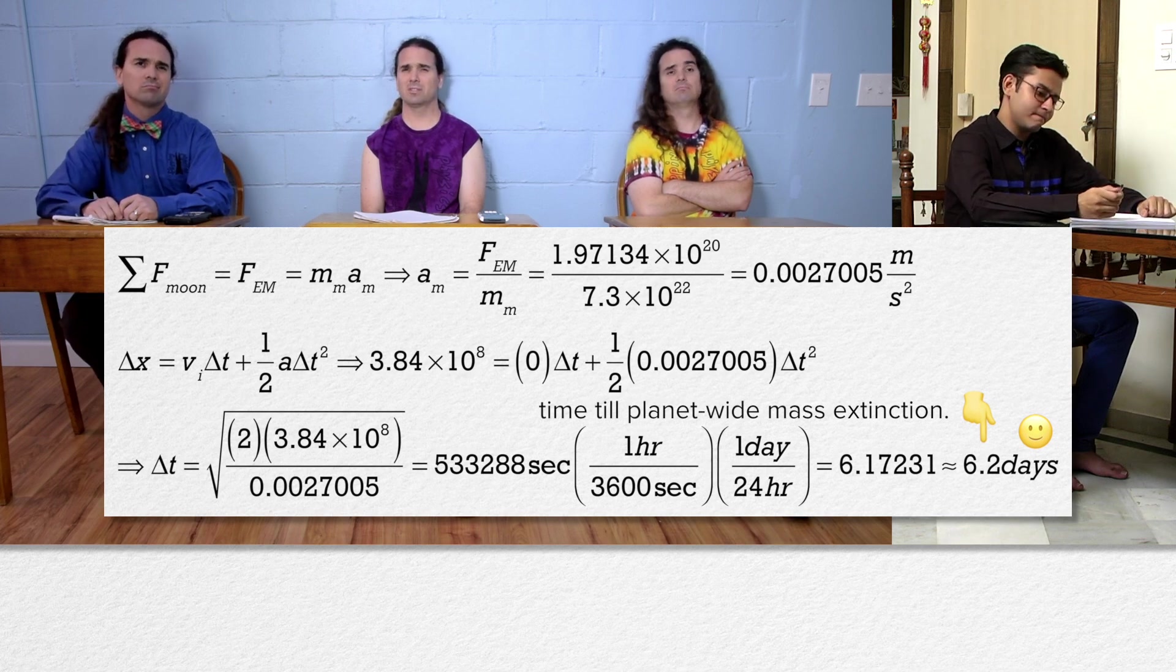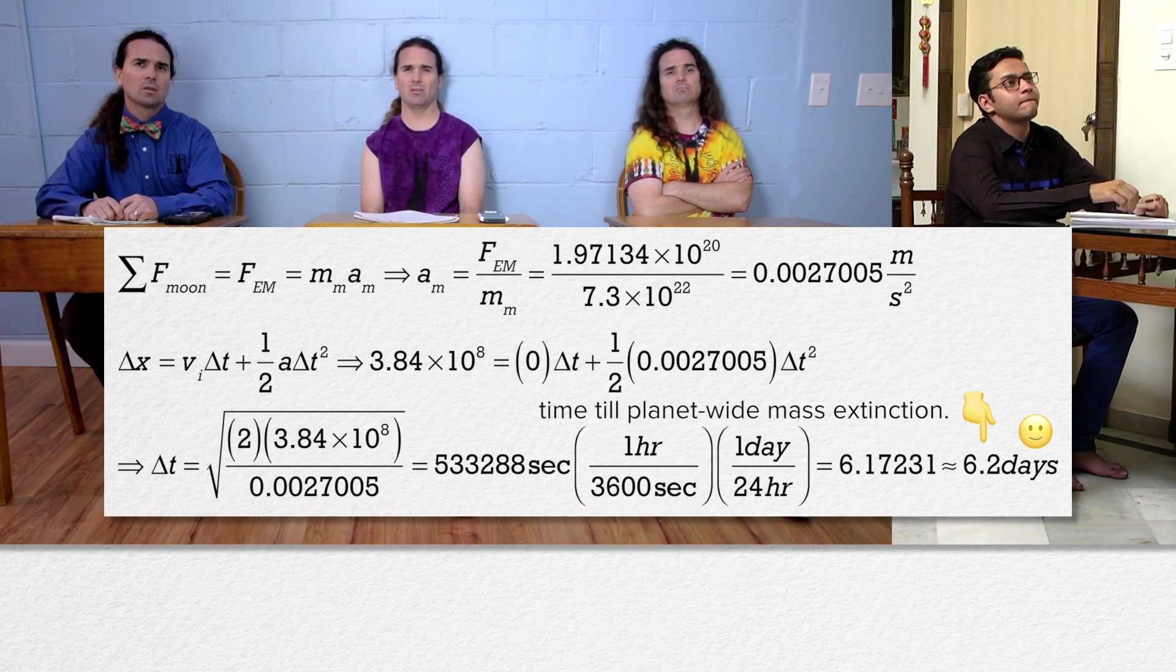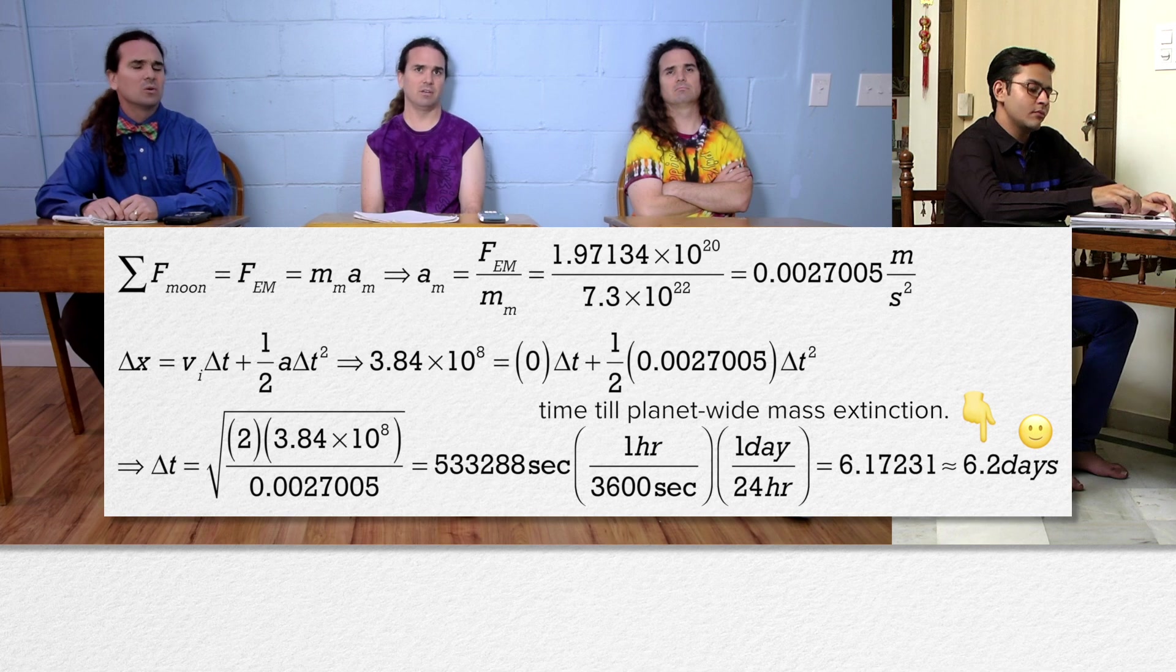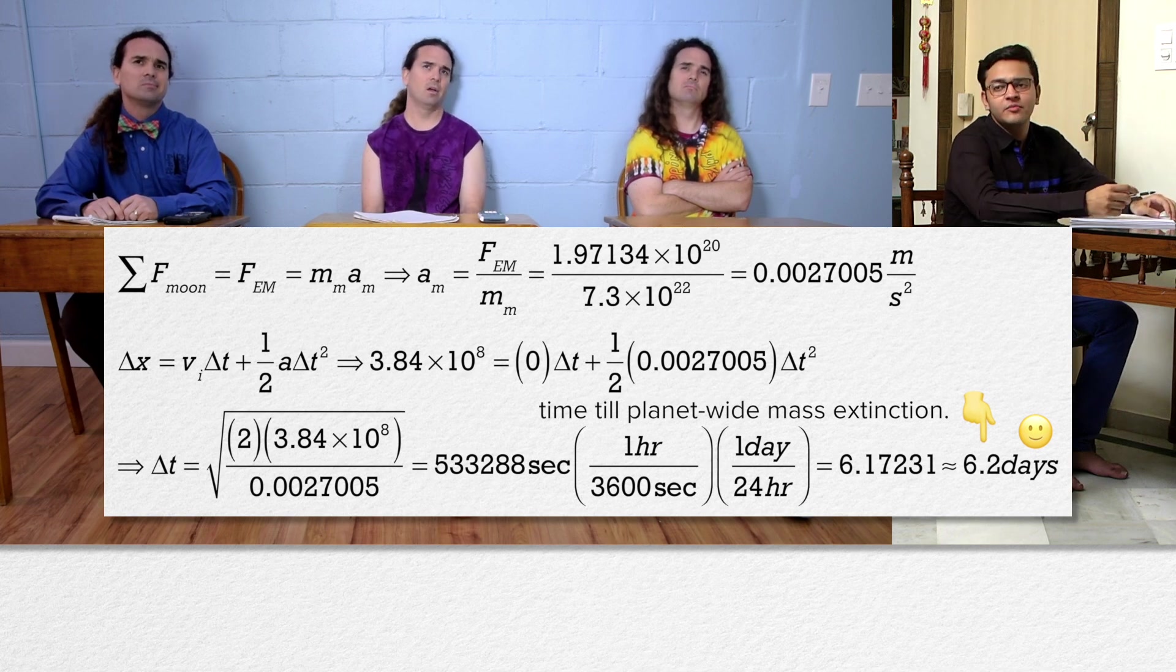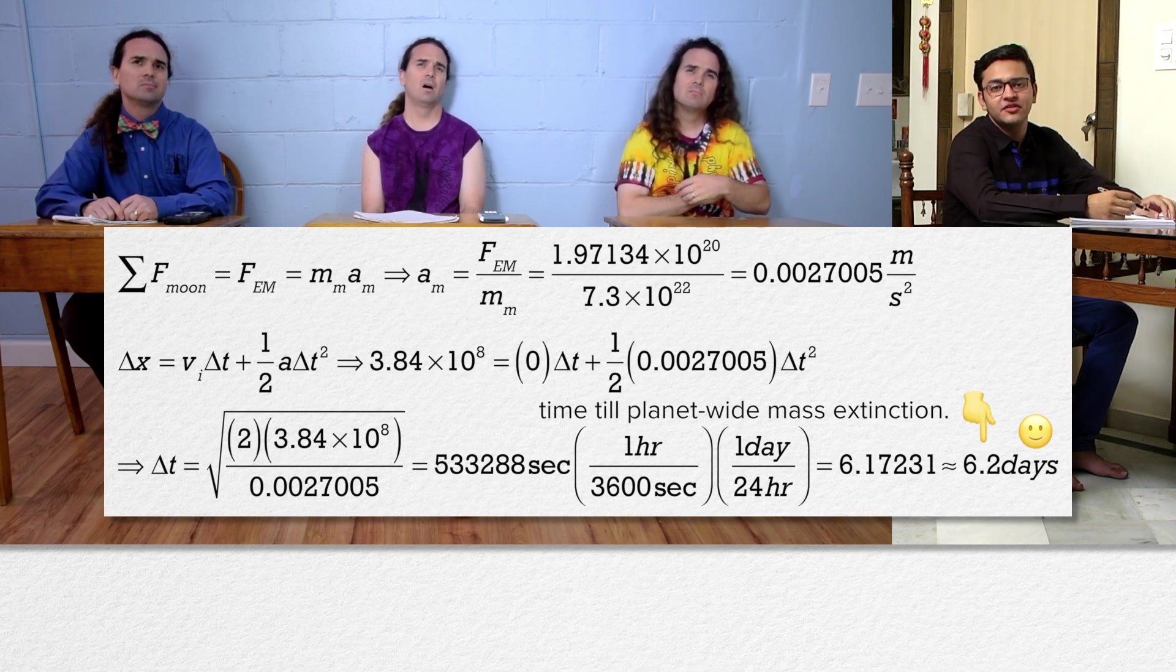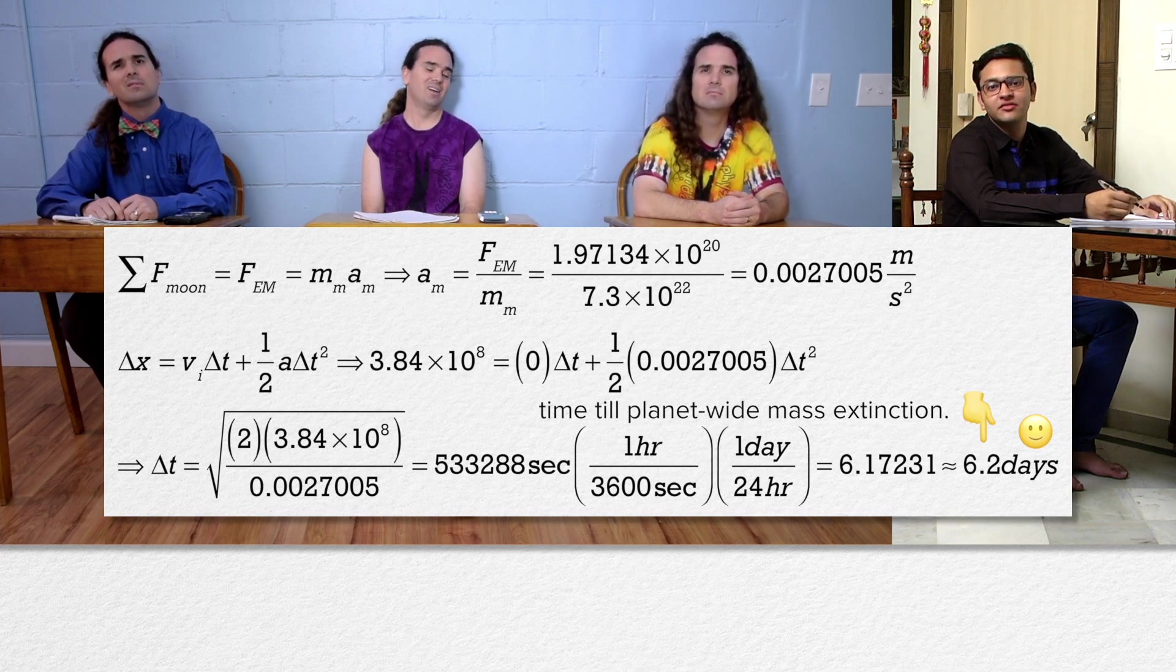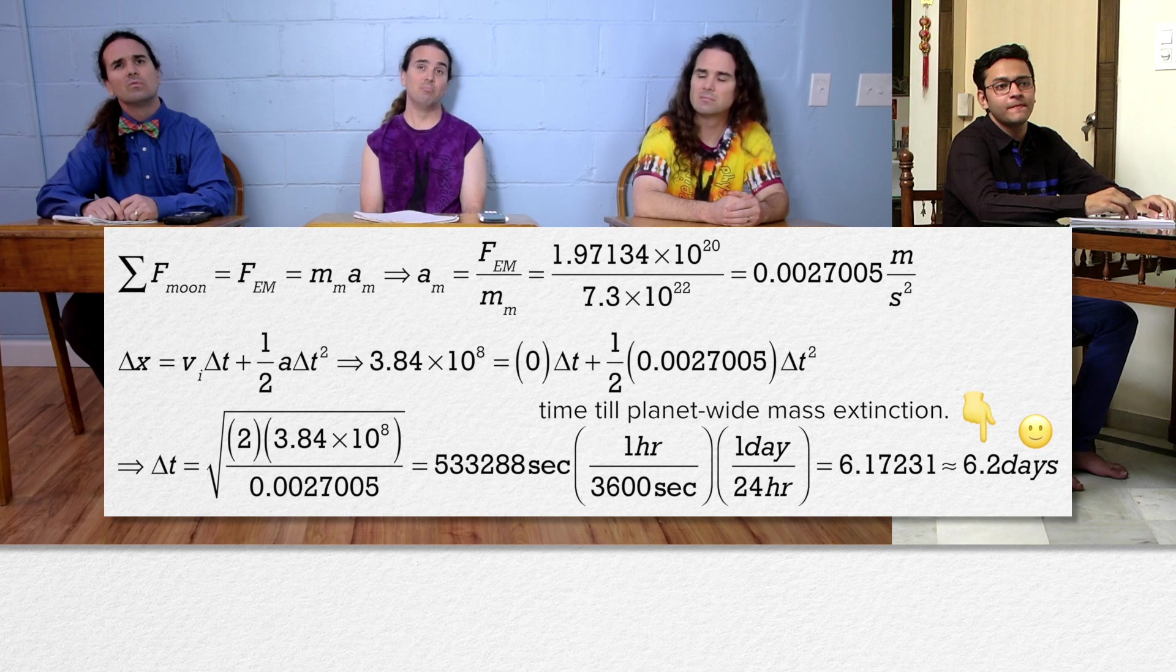There are a lot more forces acting on the Moon than just the force of gravity caused by the Earth, right? I mean, there's the Sun, Mars, Venus, Jupiter. Right, but I think he's just considering the Earth and the Moon here. I mean, the Moon is in orbit around the Earth. That's it. The Moon is in orbit around the Earth.